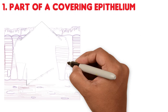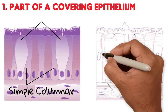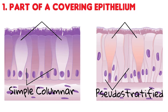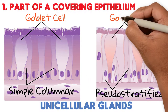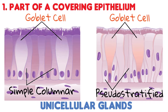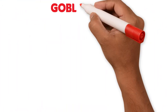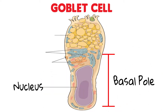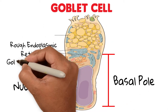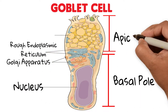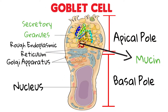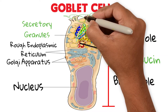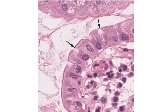Secretory cells can be found forming part of a covering epithelium that is usually a simple columnar, cuboidal, or even a pseudostratified epithelia. These scattered secretory cells are often called unicellular glands. For example, goblet cells found in the small intestine or respiratory covering epithelia secrete lubricant mucus. Goblet cells always have a nucleus close to the basal pole, abundant rough endoplasmic reticulum, and a large Golgi apparatus, with their apical cytoplasm filled with large secretory granules containing mucin.